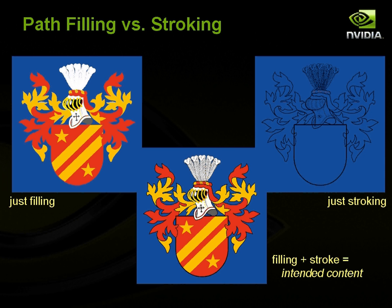Here's a picture of what filling looks like compared to stroking. This is a nice coat of arms, and on the left side you can see what the artist authored as far as the filling. On the right side you can see the stroking. And at the bottom middle, you can see when the filling and the stroking is combined to make the intended content. You can see that while you get the idea of the content from just the filling or just the stroking, it's really when you combine the two that you get the full effect.